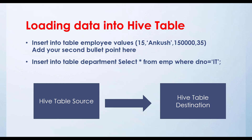The second way is when your source is a Hive table and destination is also a Hive table, but you need to insert data based on a condition. For example, you have an employee table but you are not looking for all the data — you are looking for rows where department name equals IT. So you use: INSERT INTO TABLE department SELECT * FROM employee WHERE department_name = 'IT'. This is the best way to load specific data from a source table.